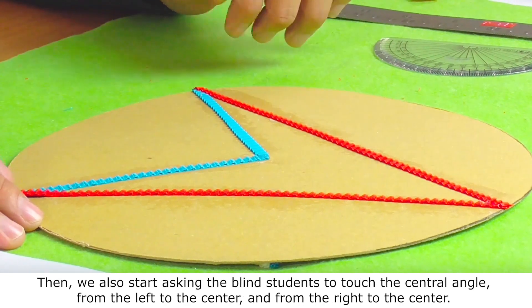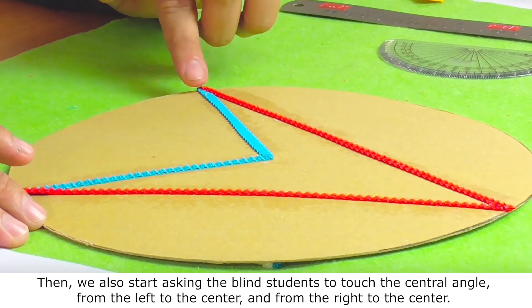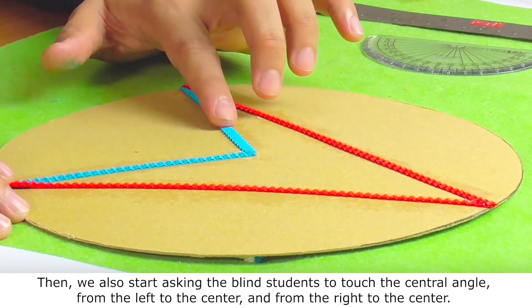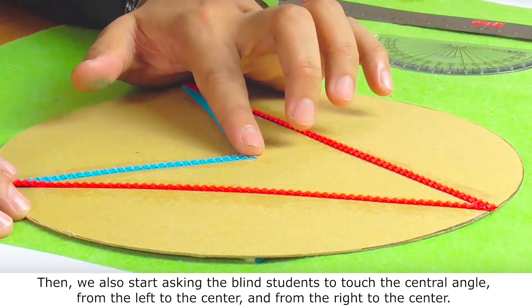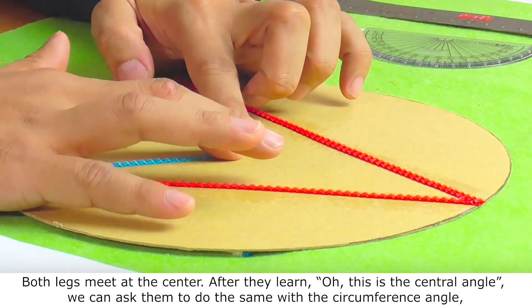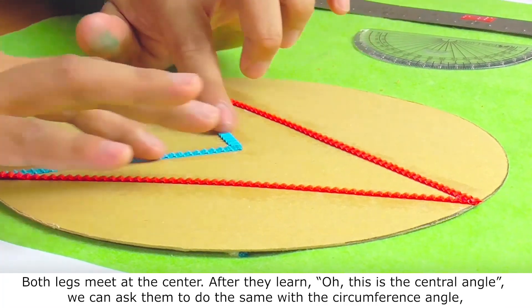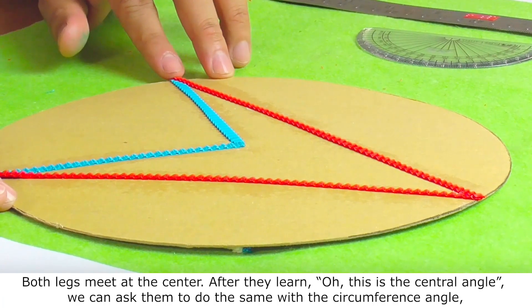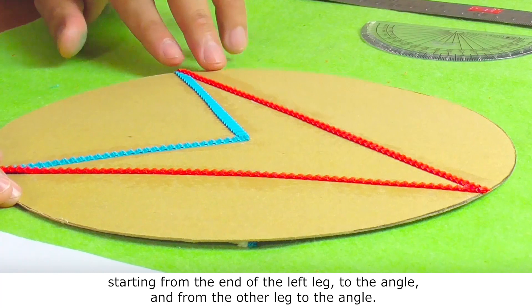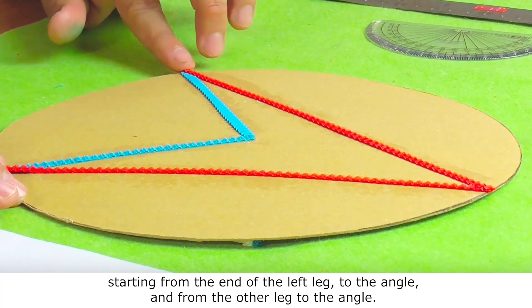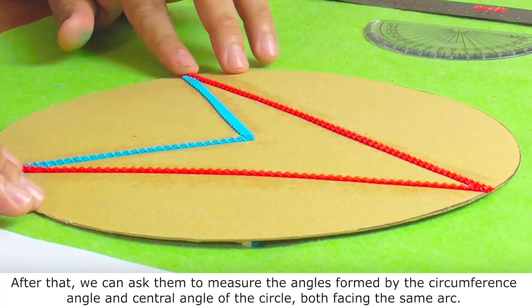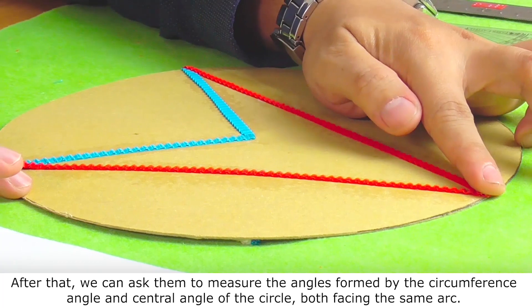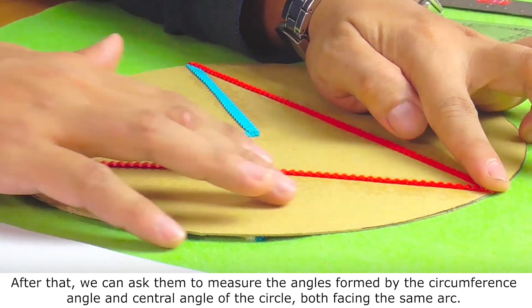Then we also start asking the blind student to touch the central angle. From the left to the center, and from the right to the center. Both legs meet at the center. After they learn this is the central angle, we can ask them to do the same with the circumference angle. Starting from the end of the left leg to the angle, and from the other leg to the angle. After that, we can ask them to measure the angles formed by the circumference angle and central angle of the circle, both facing the same arc.